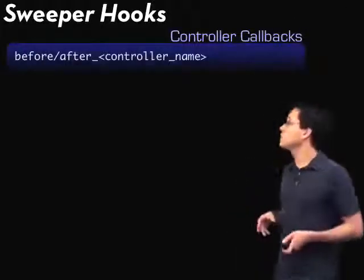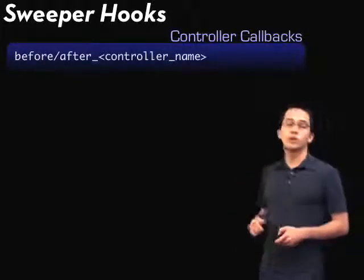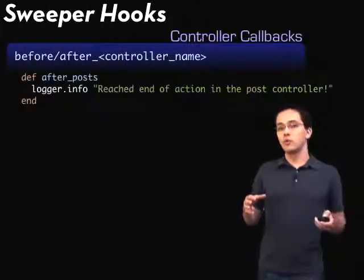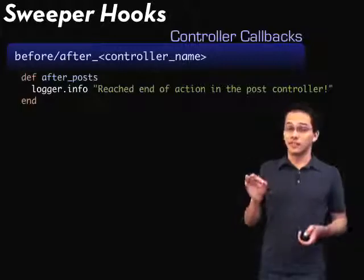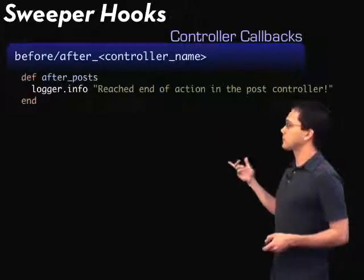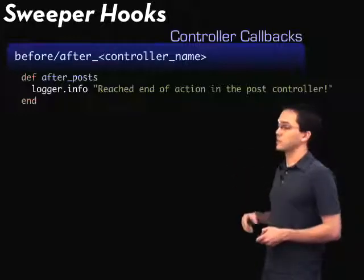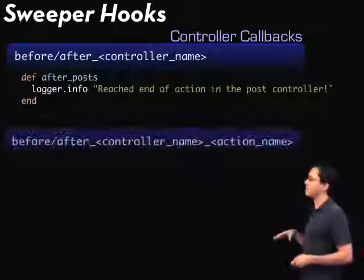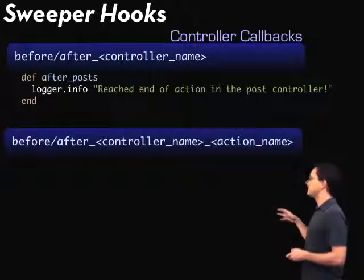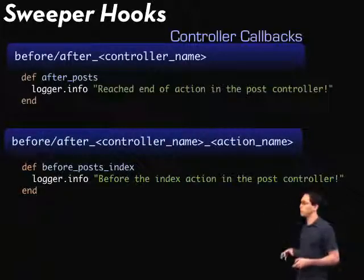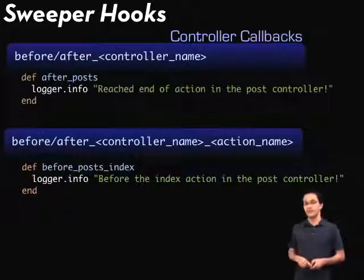Another function of sweepers that not too many people know about is that you can use them for controller callbacks. So if I wanted a method to run after or before every action in a specific controller, I could write something like this. This log statement is going to be run after every action in the post controller. I can also do this at an action level — if I wanted something to run before the index action in the post controller, I would write something that looks like this.